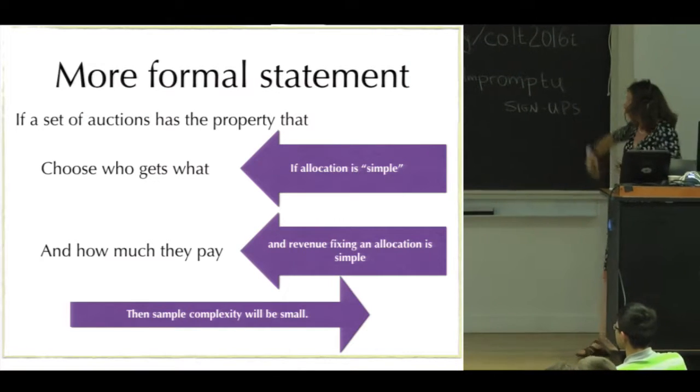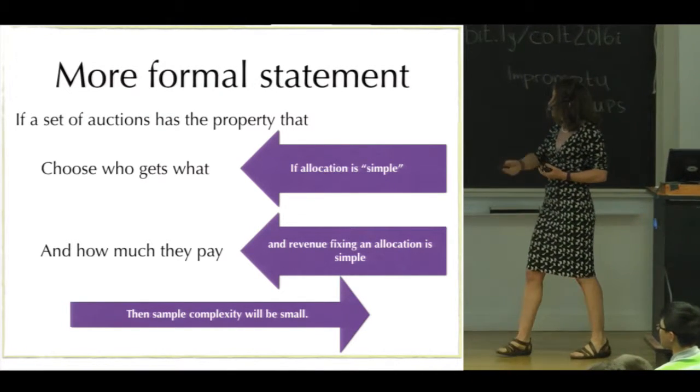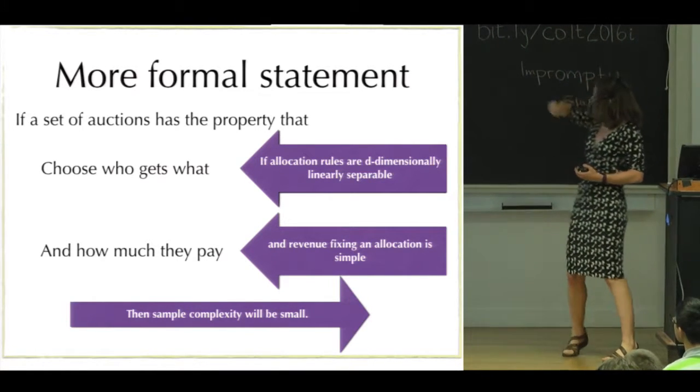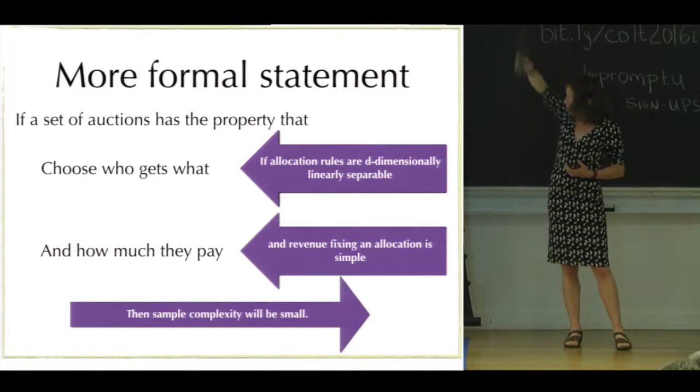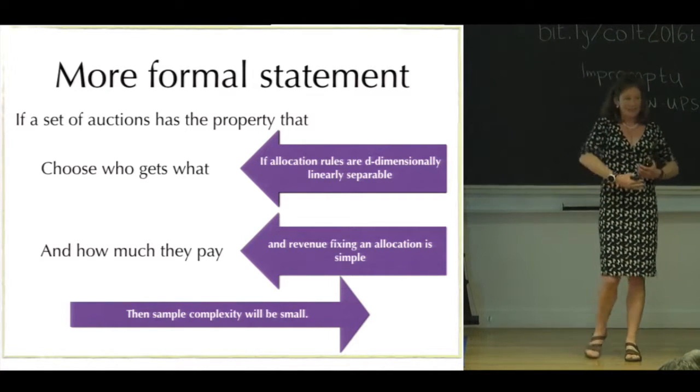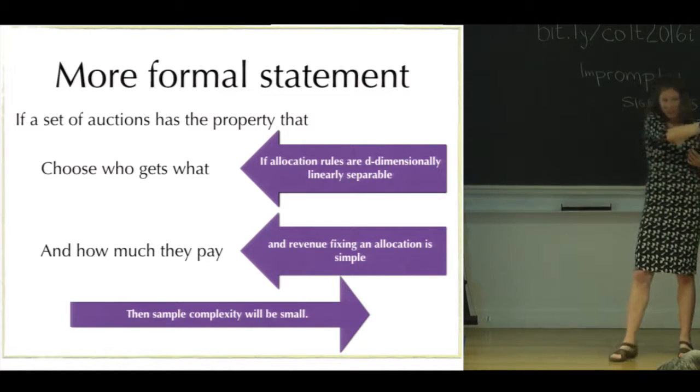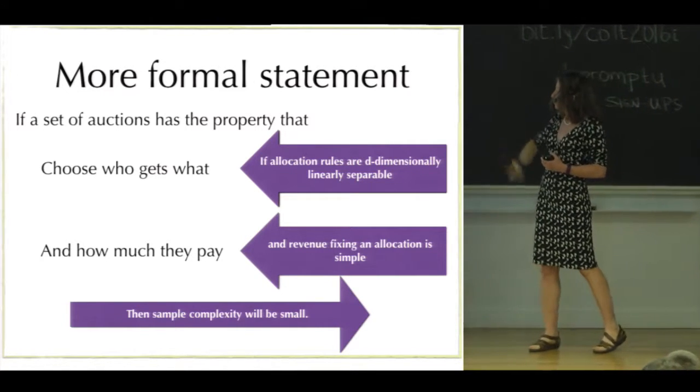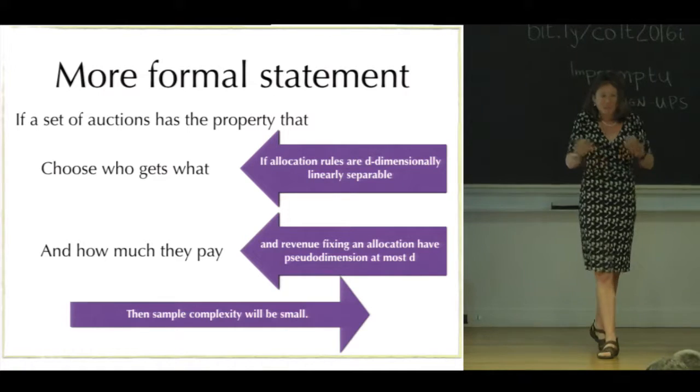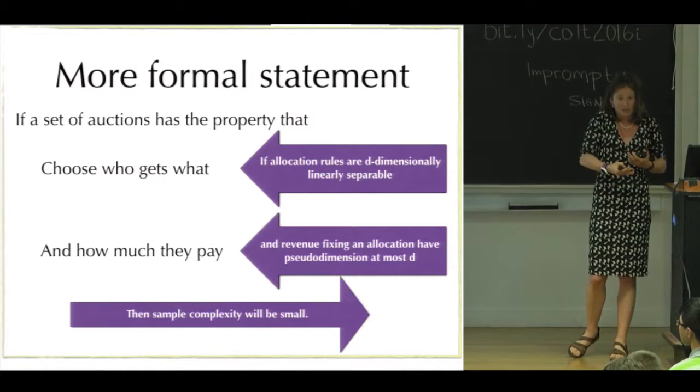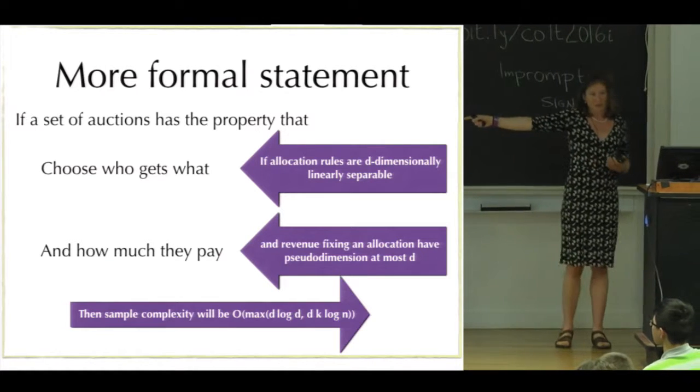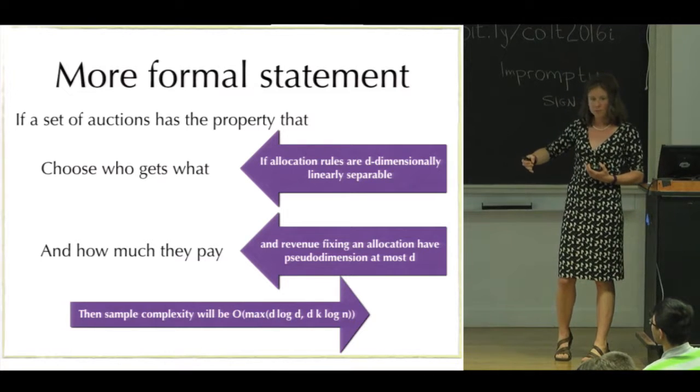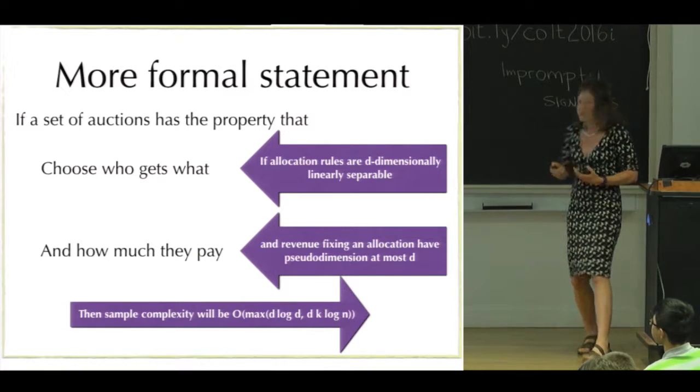Slightly more formally, what I mean is, if the allocation rules are linearly separable—meaning that there exists... I can flash a definition for that in a minute if you'd like. But if the allocation rules are linearly separable and the revenue functions fixing an allocation rule have some bounded pseudo dimension, that immediately gives you a sample complexity guarantee for learning revenue-maximizing auctions from that class.